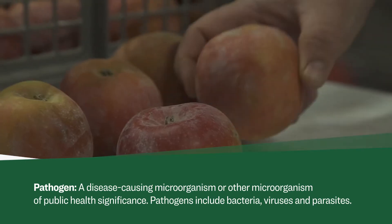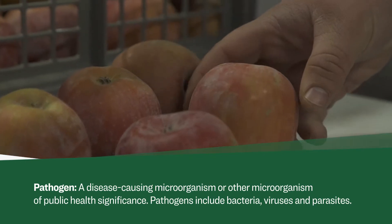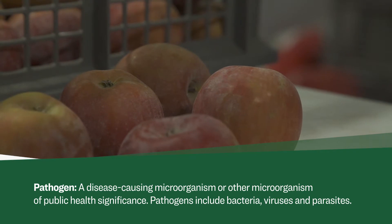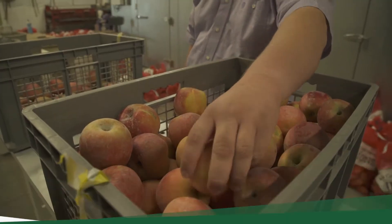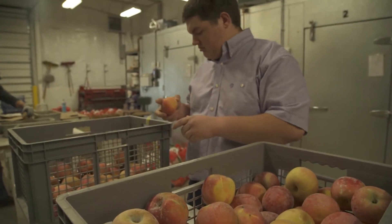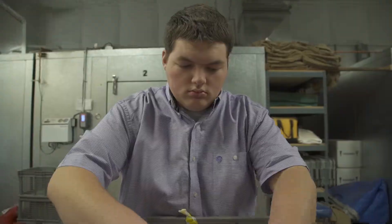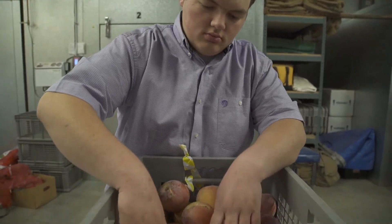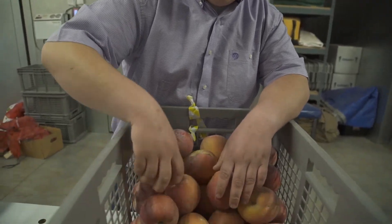Cooking or pasteurization are two ways to kill pathogens on and in foods, but fresh fruits and vegetables are most often consumed raw. Therefore, knowing how to prevent cross-contamination is critical. Understanding how pathogens are transferred from person to produce is the first step in preventing foodborne illness outbreaks.